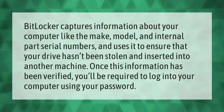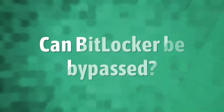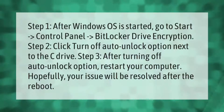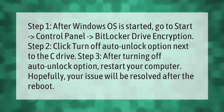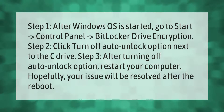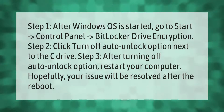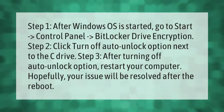Step 1: After Windows OS is started, go to Start, then Control Panel, then BitLocker Drive Encryption. Step 2: Click the 'Turn off auto unlock' option next to the C drive. Step 3: After turning off the auto unlock option, restart your computer.